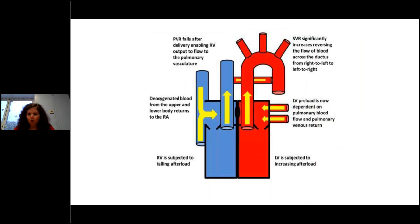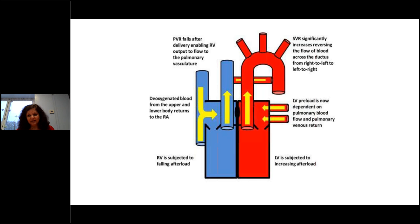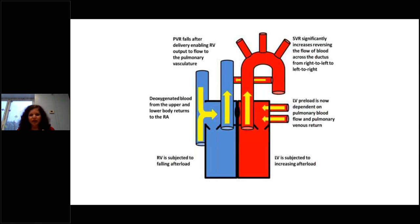When a baby is born, that low-pressure placental circulation is cut off with clamping of the umbilical cord, causing an increase in peripheral vascular resistance. The preterm baby's innate peripheral vascular tone is already quite high. So the heart must suddenly pump against increased afterload, while all blood now directs into the heart, which must pump through the lungs where pulmonary vascular resistance is still elevated — transitioning from fetal to neonatal circulation.